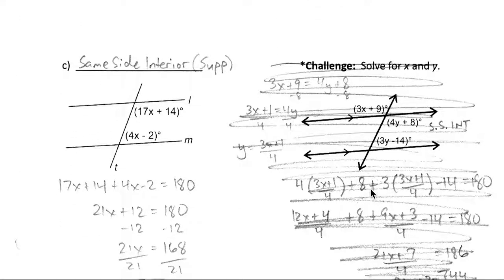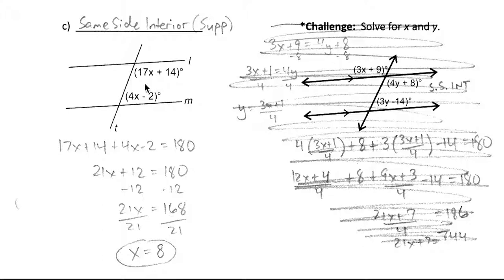Alright, last one. Recognize that these two angle types are same side interior angles. So same side supplementary. So we're gonna combine our like terms and set it equal to 180. So combining our x's, 17x and 4x, we get 21x. 14 and negative 2, that's 14 minus 2, is positive 12. Two more steps. Let's subtract 12 to get our x term by itself. So now we have 21x equals 168. We'll divide by 21 to undo that multiplication, and 21 goes into 168 eight times.